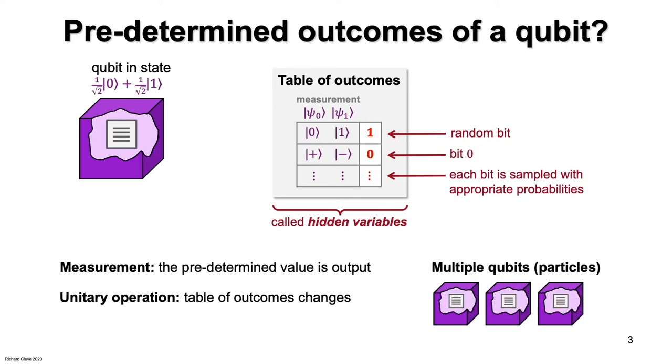And in this picture, every spin one half particle has its own separate table. If multiple particles are in the plus state, then each one contains an independent random bit for the first entry in its table of outcomes.